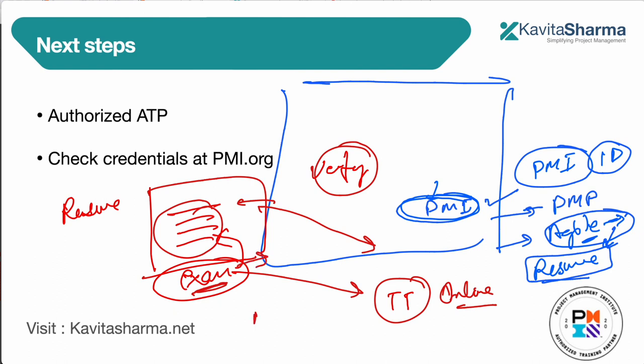Once you pass the exam, you receive an Authorized Trainer badge from PMI, which you can display on LinkedIn or your own website. You can then publish your training modules through an ATP's platform, or build your own infrastructure — a learning management system, Zoom meetings, or classrooms — and start your sales process.